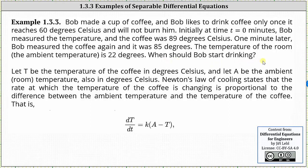Let big T be the temperature of the coffee in degrees Celsius, and let A be the ambient temperature or room temperature, also in degrees Celsius. Newton's law of cooling states that the rate at which the temperature of the coffee is changing is proportional to the difference between the ambient temperature and the temperature of the coffee. That is, dT/dt — meaning the change in the temperature of the coffee with respect to time in minutes — is equal to some constant K times the difference of A and big T, where A is the ambient temperature and big T is the temperature of the coffee.